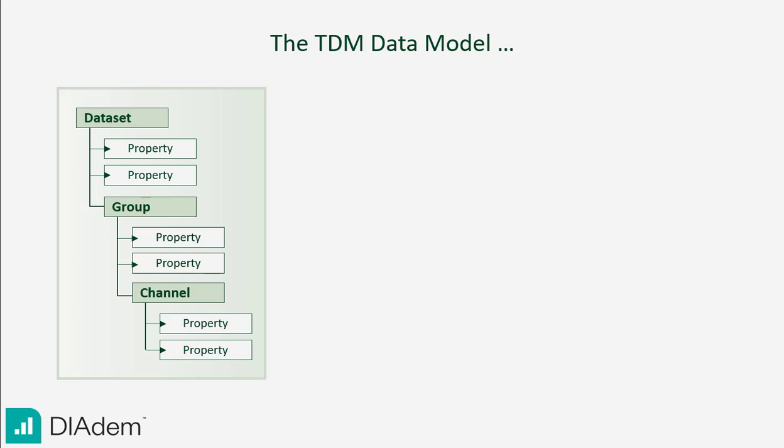You can use these custom properties to help document your data directly in the file instead of creating additional documents. Custom properties also have another advantage when searching with Data Finder — they can be used as search criteria when compiling the data you want to work with.